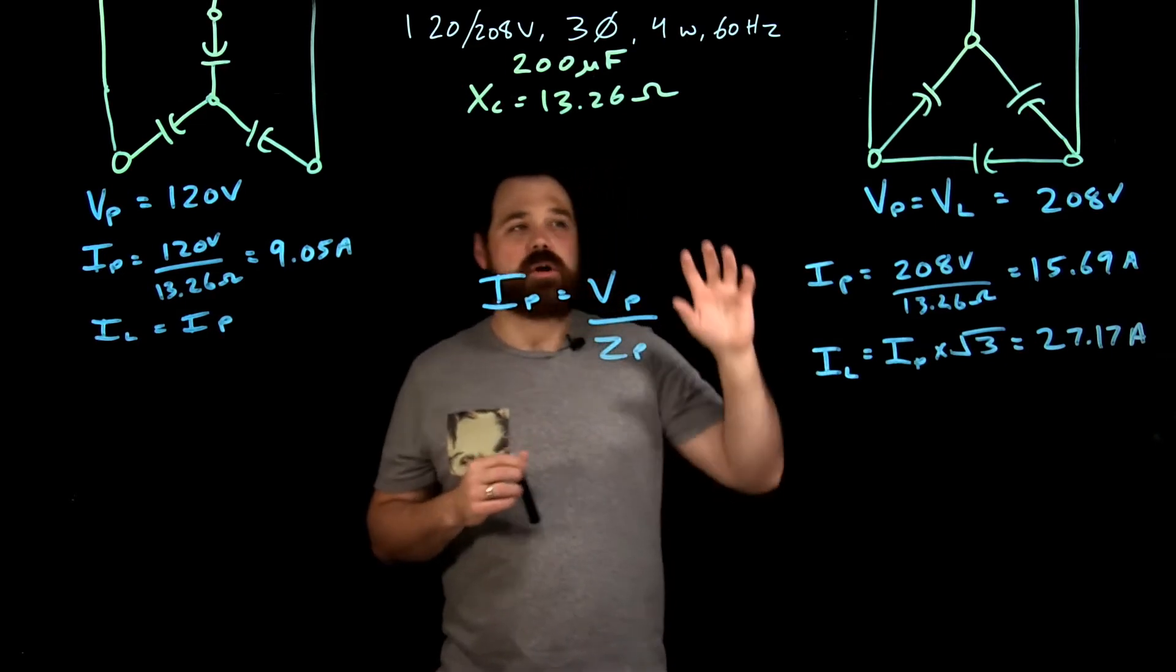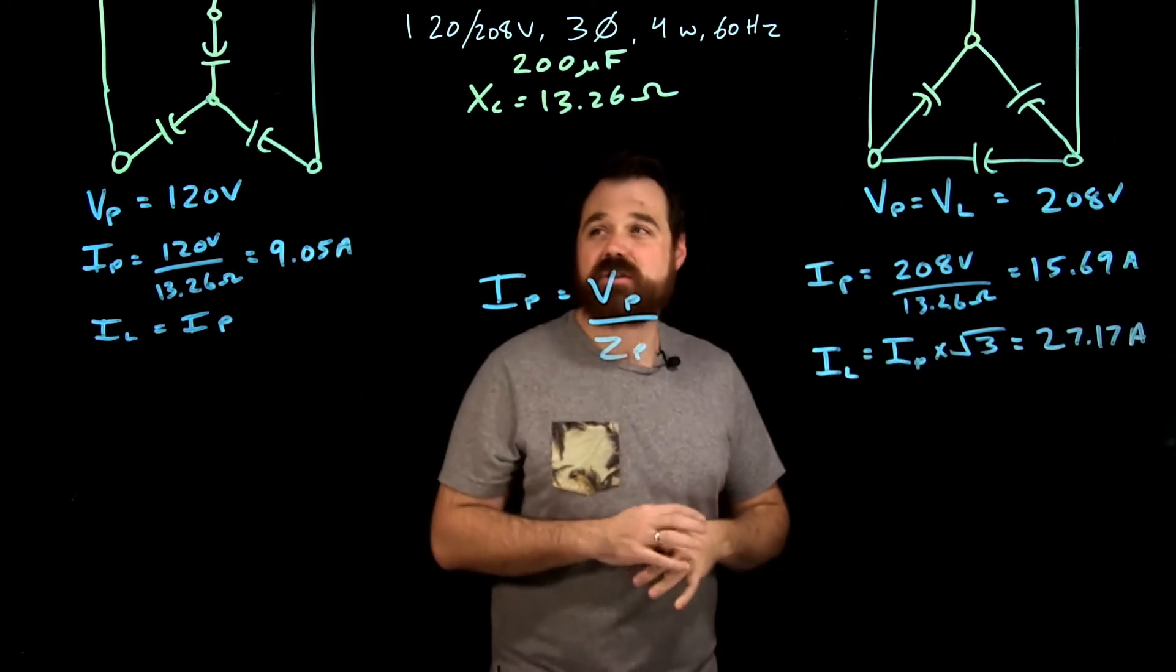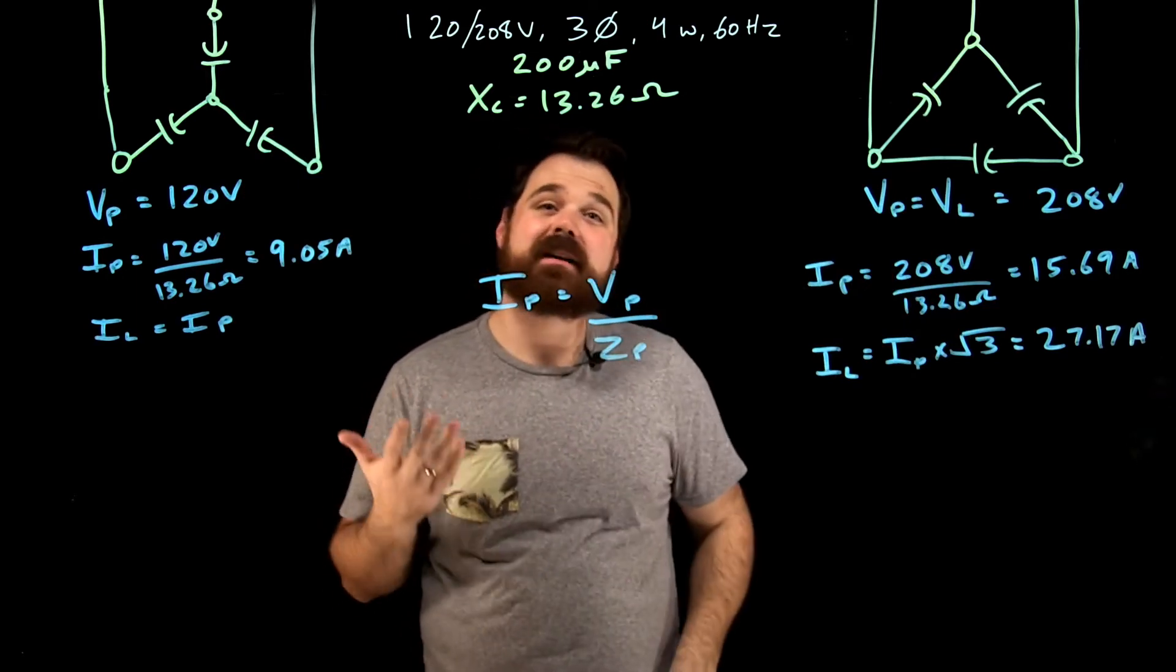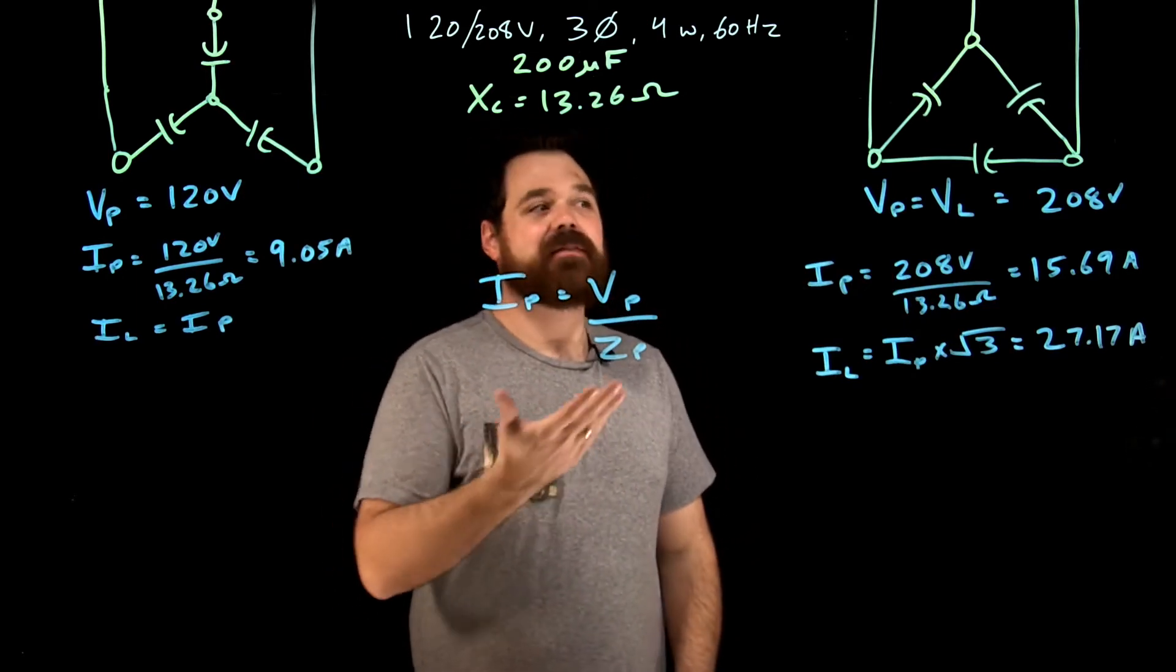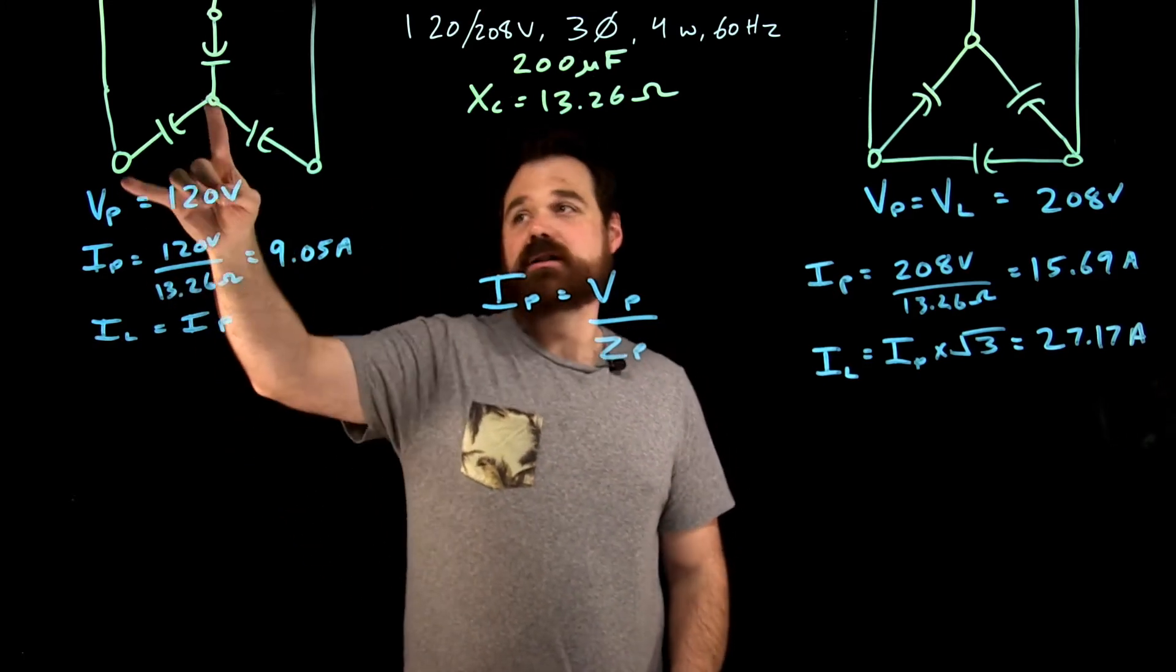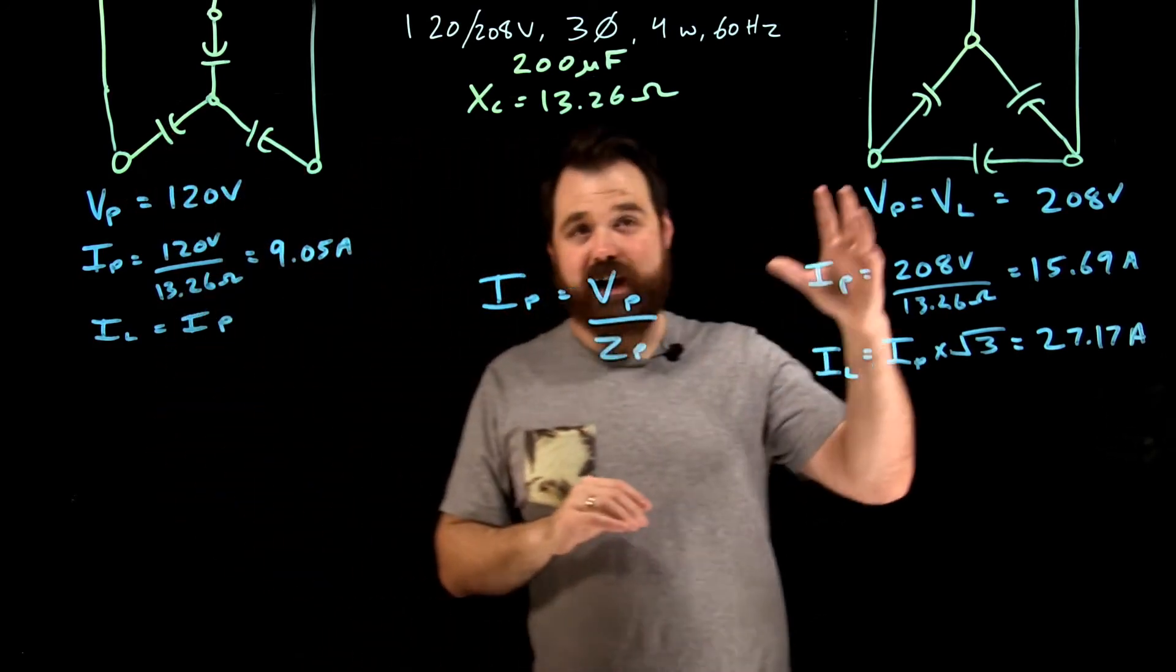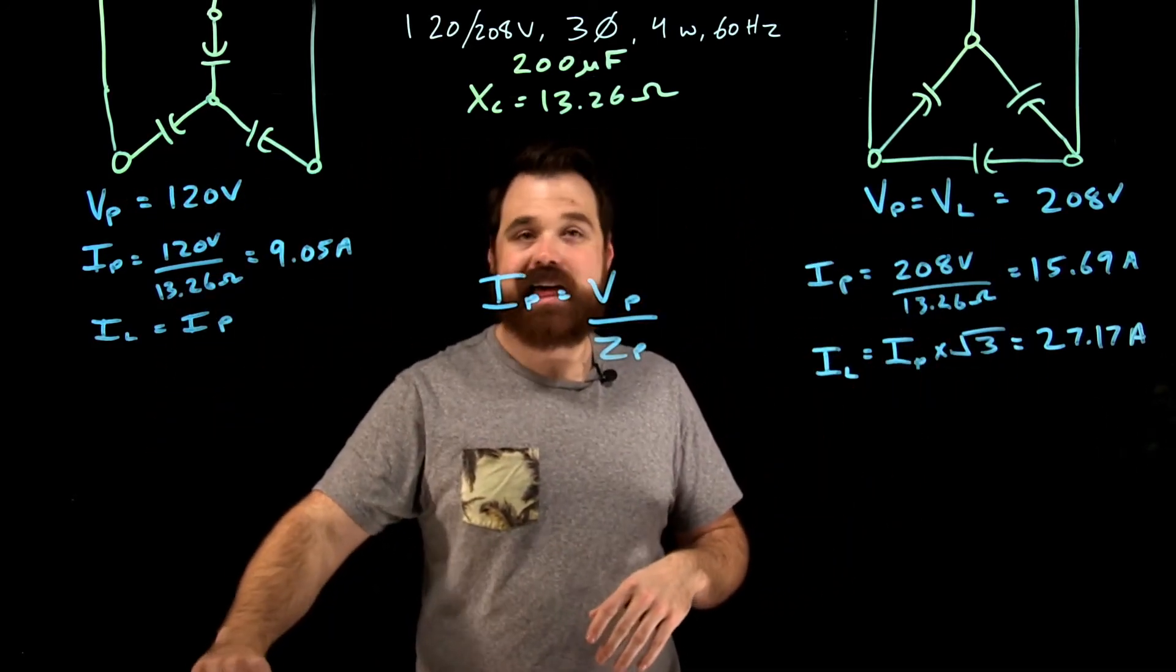Crazy. So if I hook them up in Y, my line current I can see is three times larger than when I hook them up in delta. That's a significant amount more current on my line, which could be very beneficial to me, depending on my application. But if I can only buy 150 volt rated capacitor, then I'm going to go on a Y connection because I'm only going to see 120 volts across that capacitor. So it's kind of what's your capacitor rated for, what kind of line current you need out of it, and you'll connect your circuit that way.